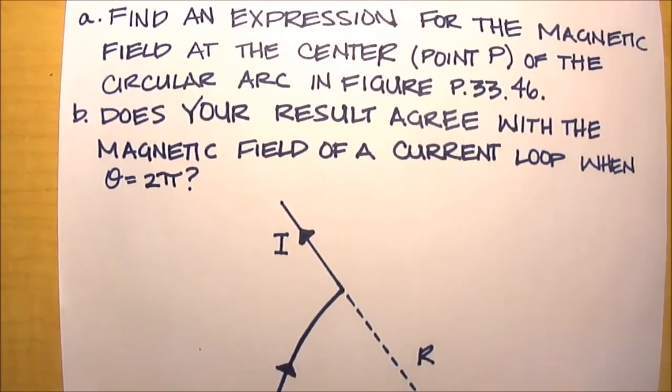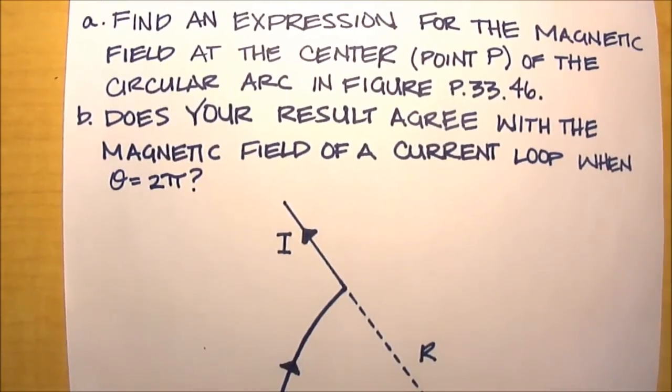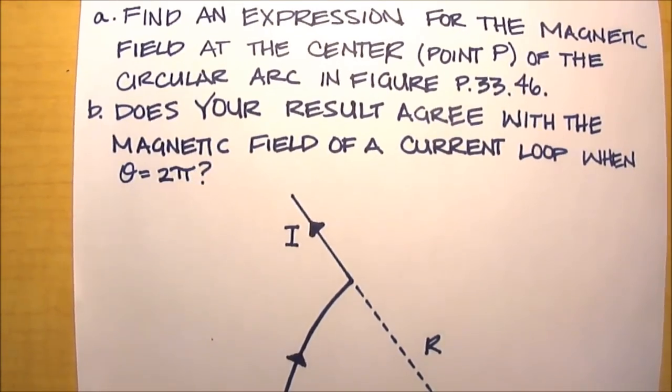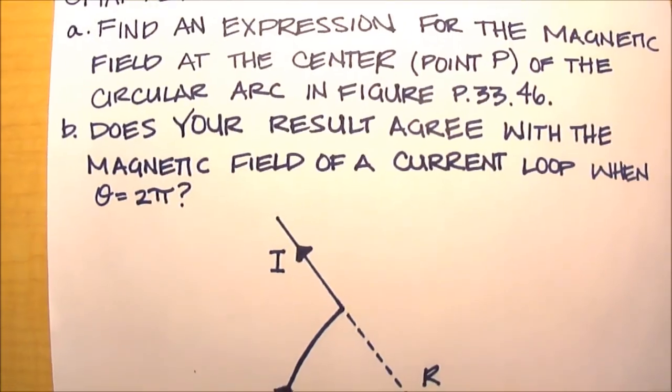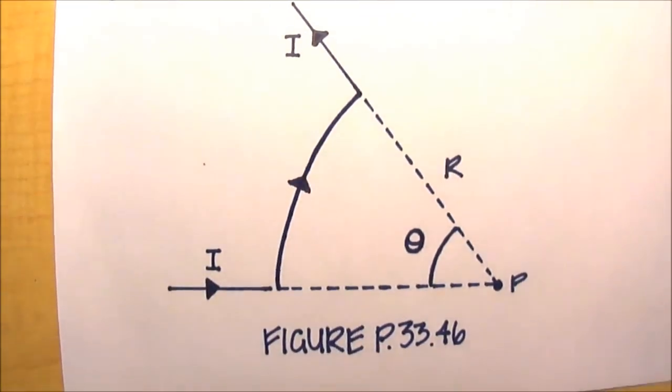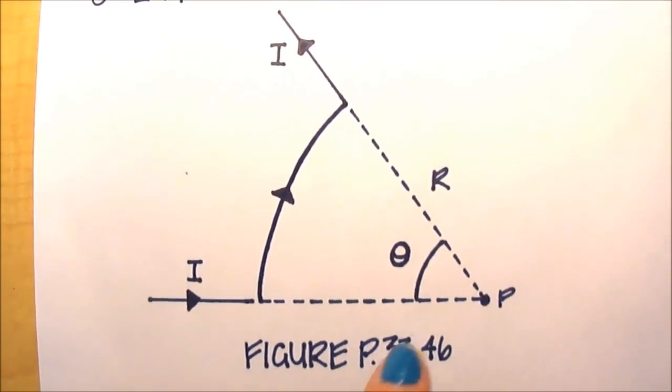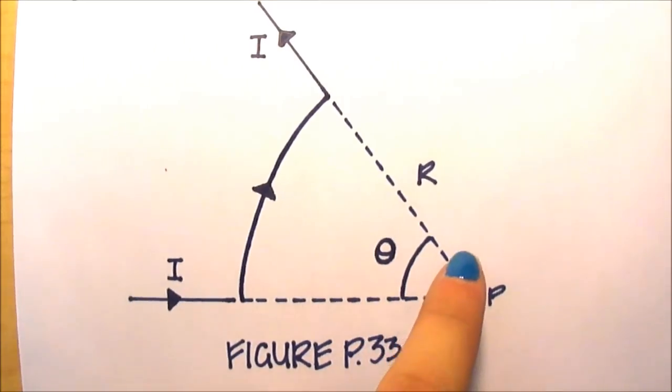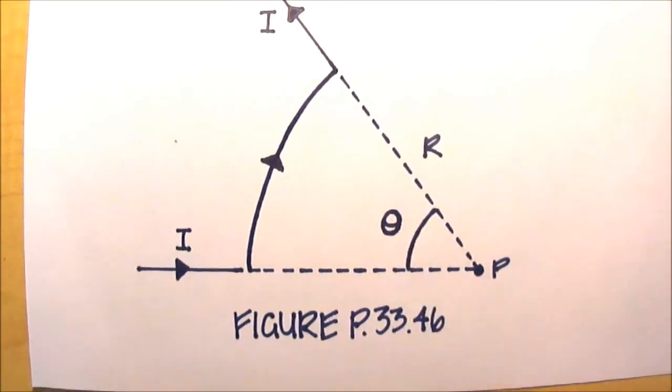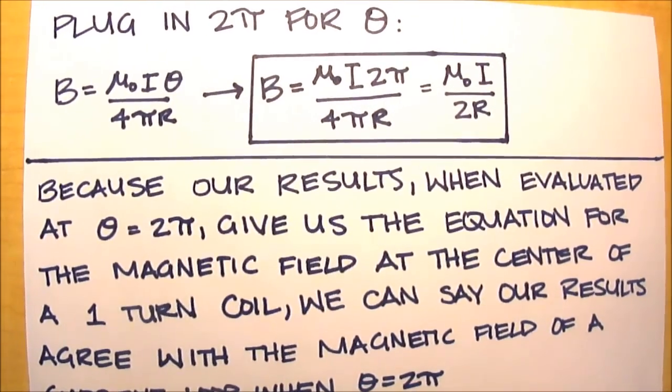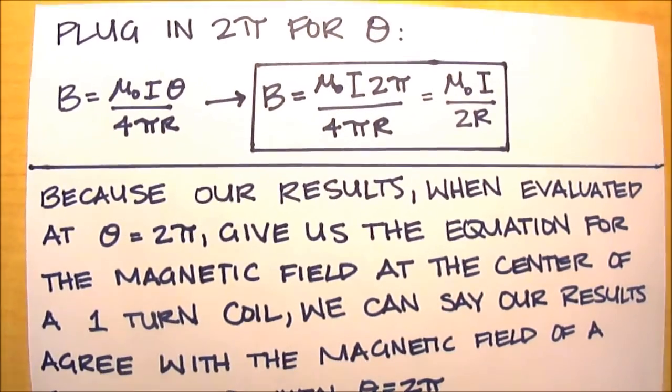Just to recall, part B asked: does your result agree with the magnetic field of a current loop when theta equals 2π? Now before, when we found the expression for the magnetic field at the center of the arc, we used this angle because this arc just encompasses this angle. Now to account for an entire loop, all we have to do is plug in 2π for theta.